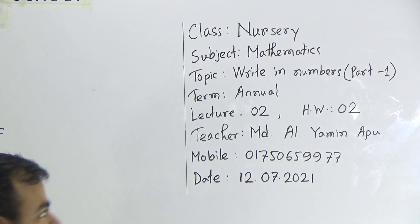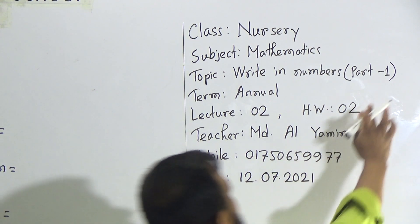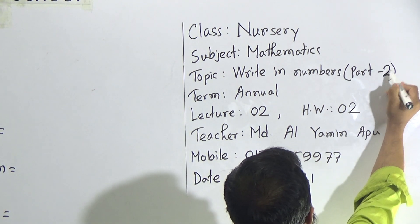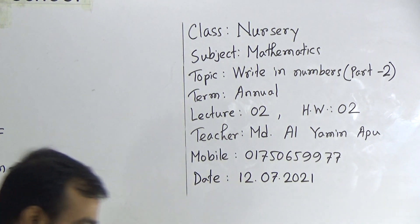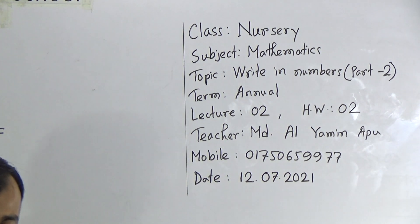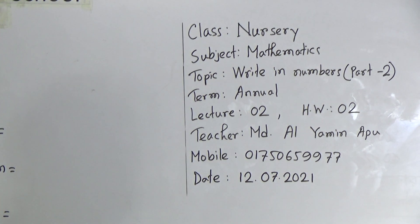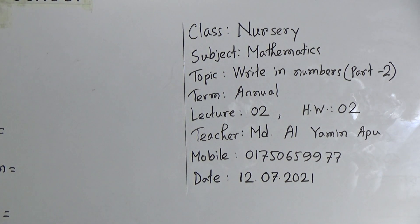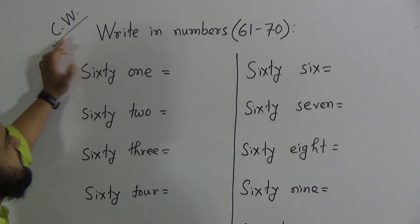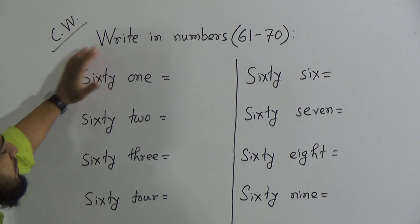This will be Part Two of 'Write in Numbers.' In the first class we learned Part One, that means from 51 to 60 — we have already learned that. This is the second class for the annual term examination. Now students, look at the board: 'Write in Numbers' — this is a CW class.